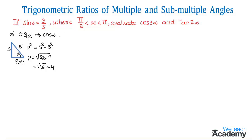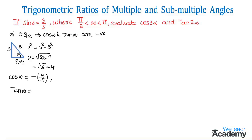Since α lies in the second quadrant, cos α and tan α are both negative. Therefore cos α = −(adjacent/hypotenuse) = −4/5, and tan α = −(opposite/adjacent) = −3/4.